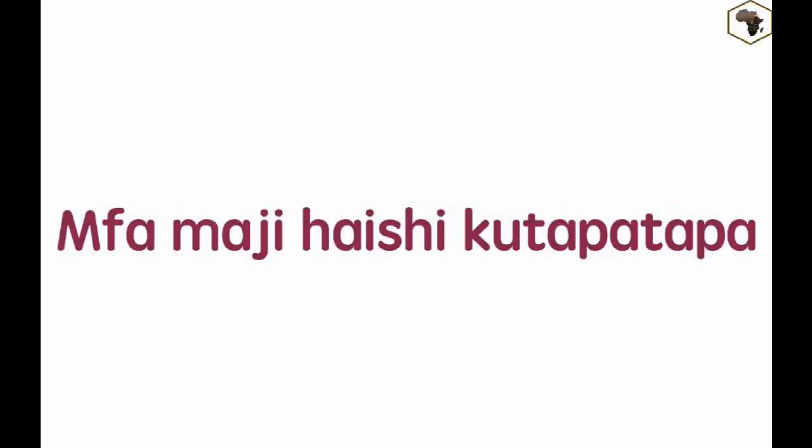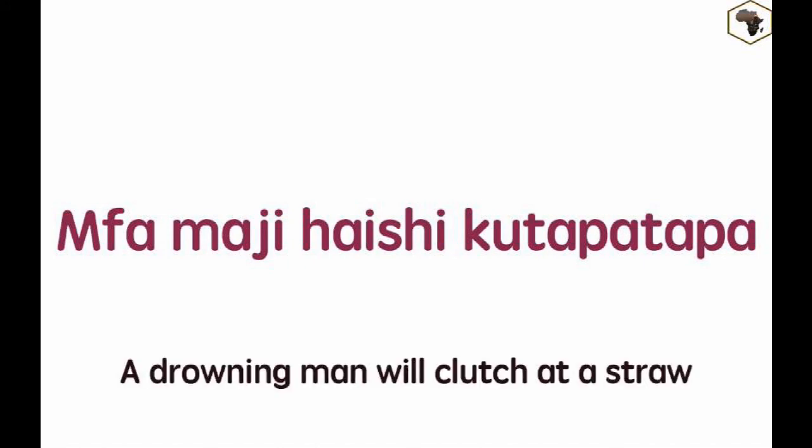Next: Mfamayi haishi kutapatapa, which means 'a drowning man will clutch at a straw.' This means if somebody is going to die, he will do anything to save his life — even if there is only a very small hope.